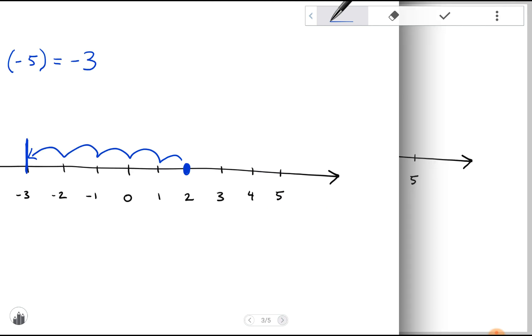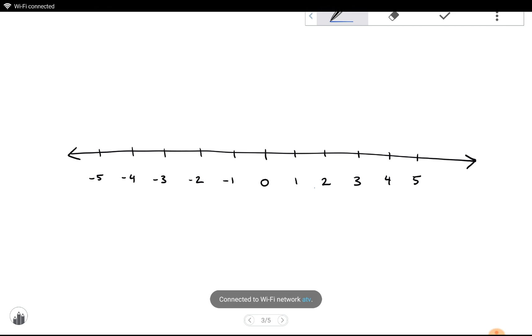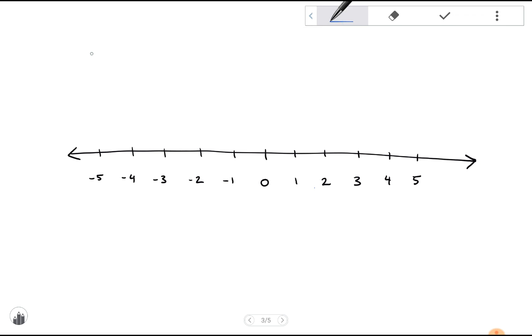When we say adding a negative number, it's the same thing as subtracting. For instance, if we start with one and we're going to add negative four, we're starting here and going four units to the left. What we're really saying is this is the same as one minus four, and we can represent that just as we did for the last one.